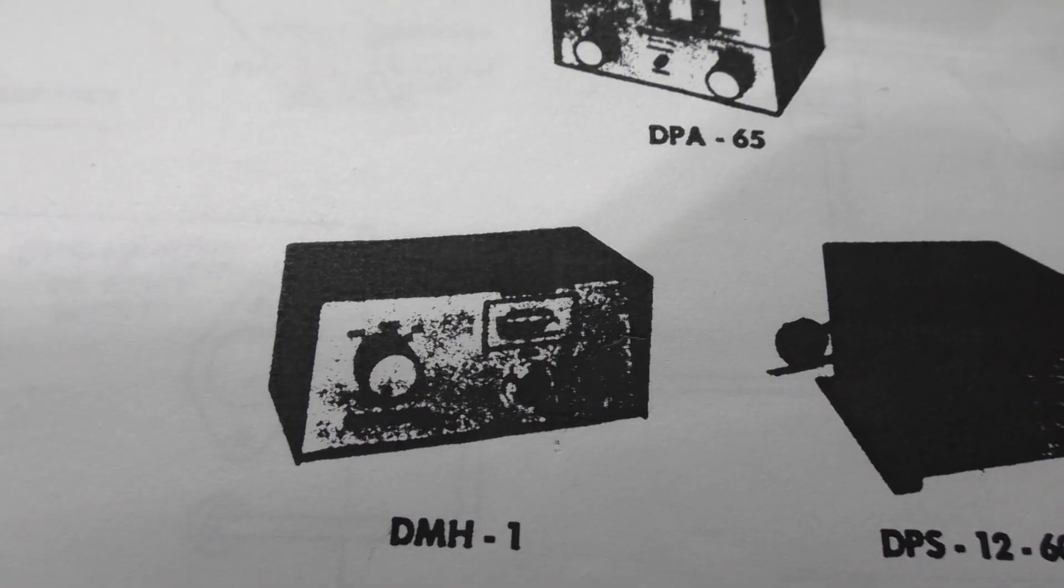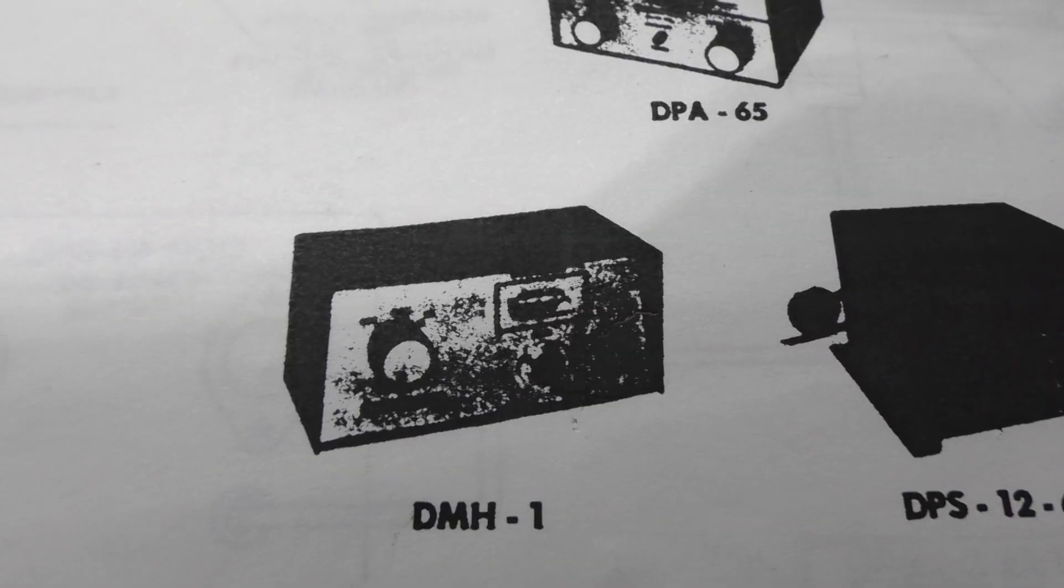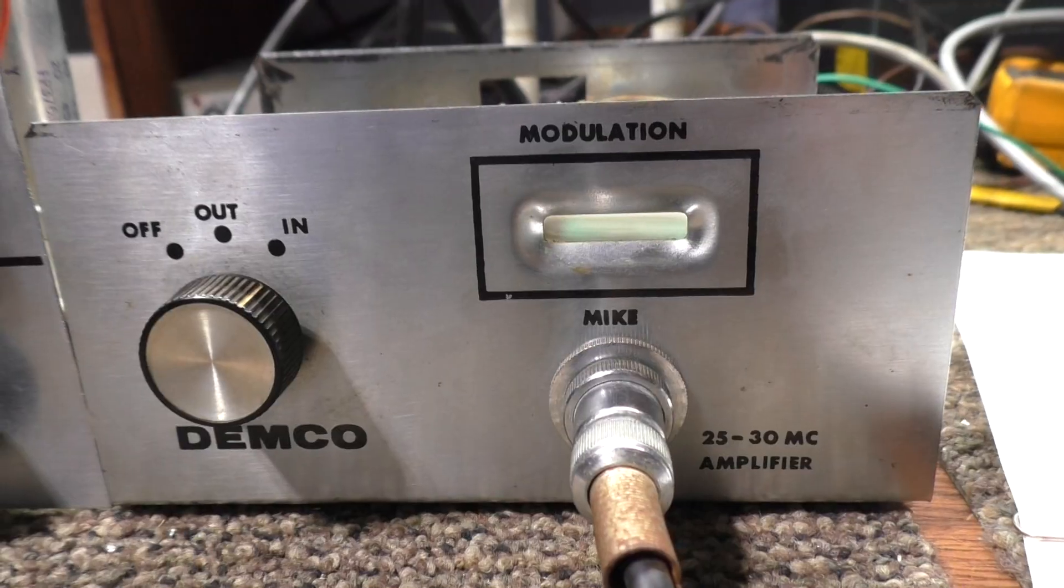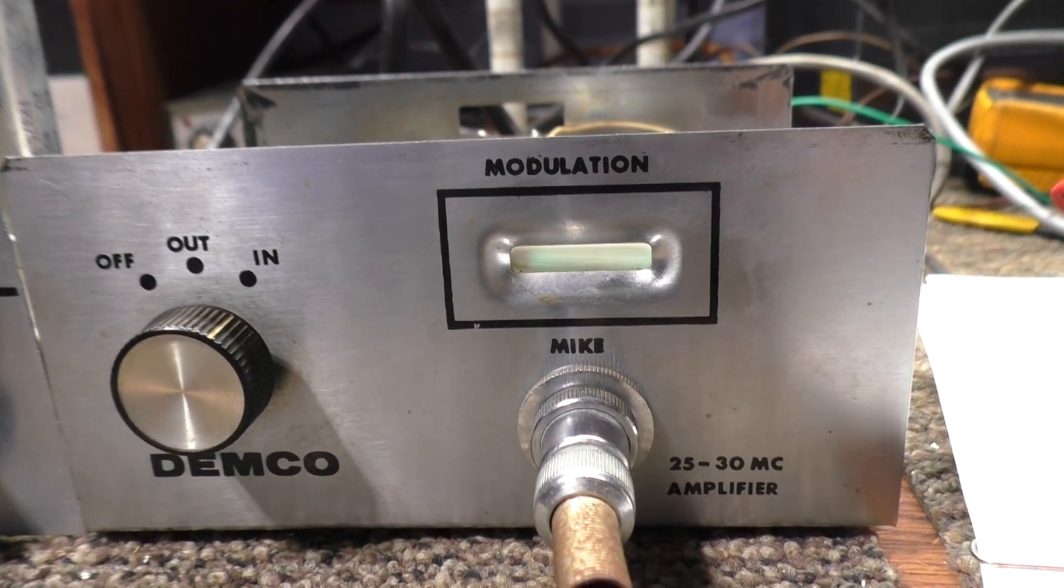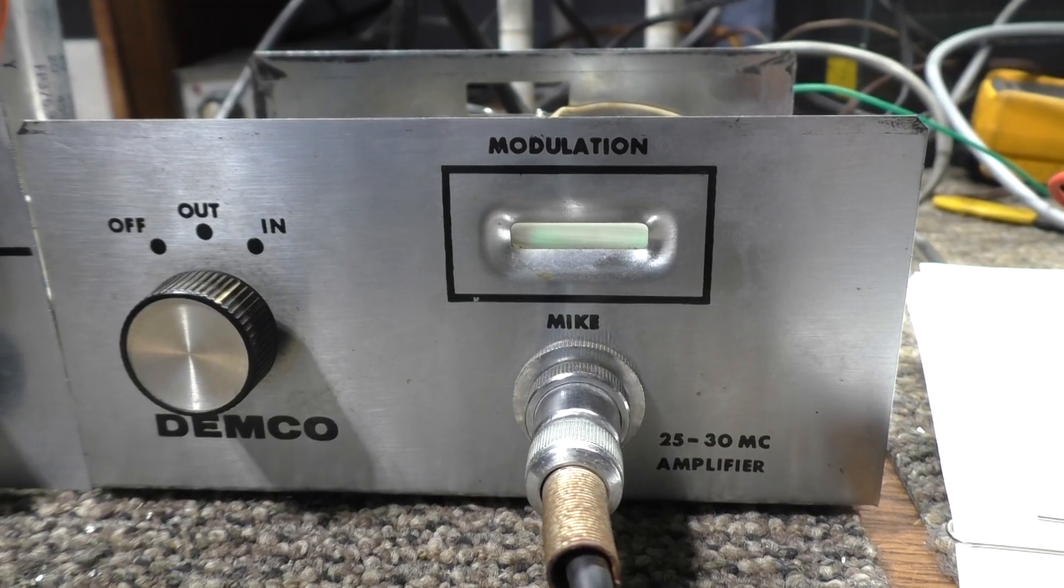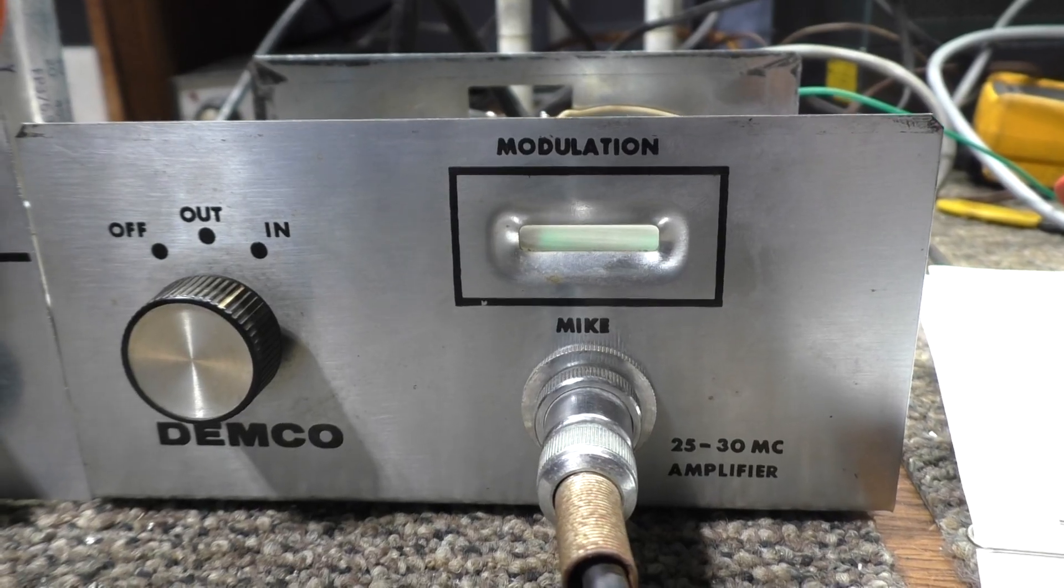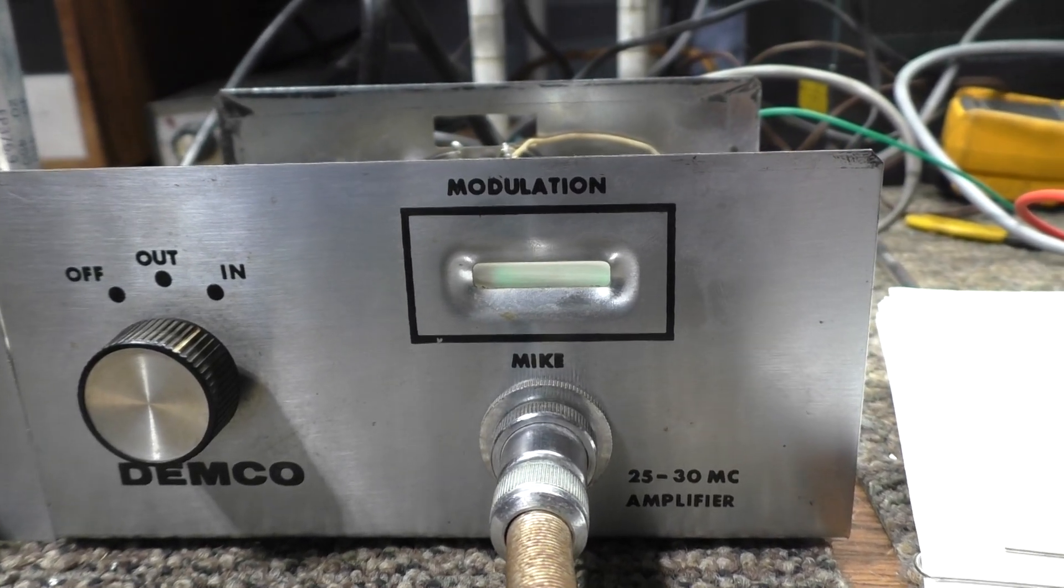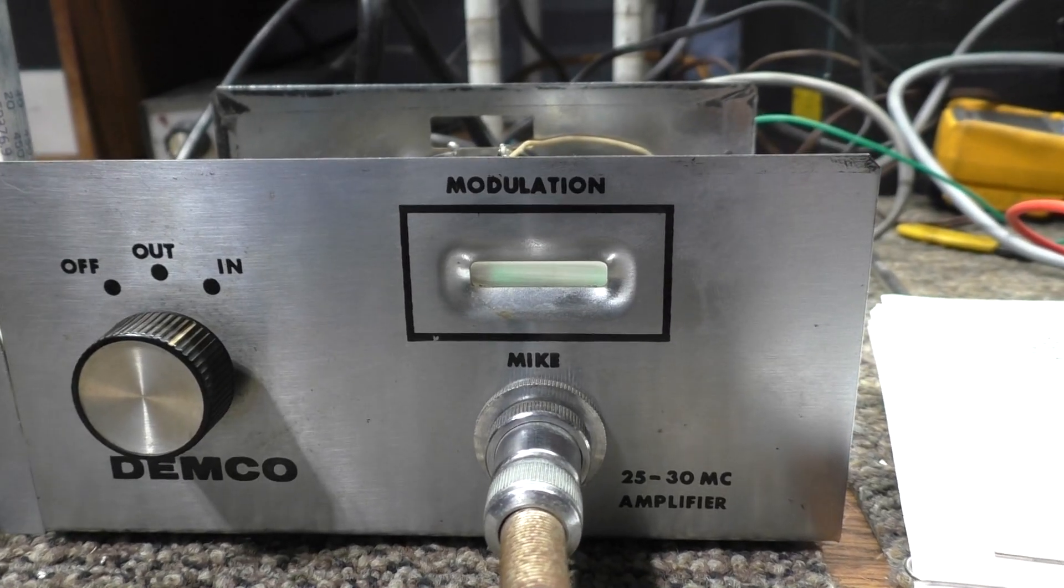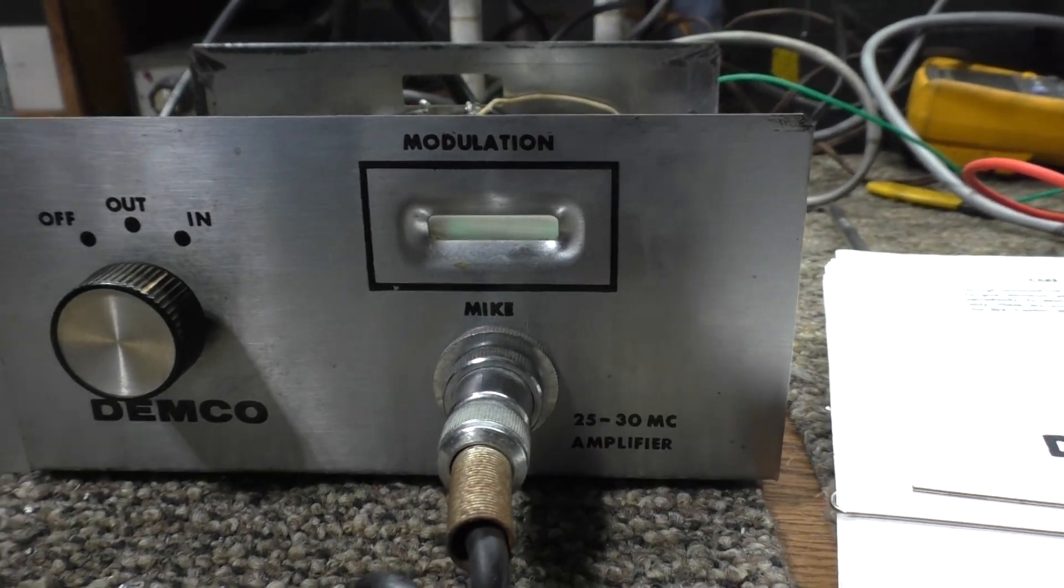And it's also got the DMH1 modulator part of it, and that is what it is. This thing here is similar to a DEMCO modulator. A DEMCO modulator is just a microphone amplifier with a compression or clipper built into it. It's just a high-fangled microphone amplifier compressor. That's all the DEMCO modulator is.